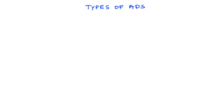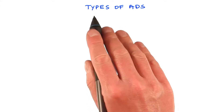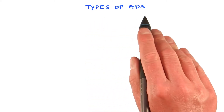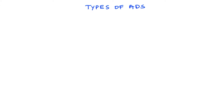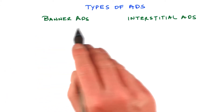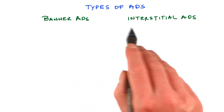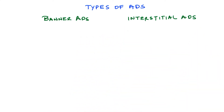All right, so let's now talk about the different types of ads that you can have in your app, and what they look like. In this lesson, we will focus on the following types of ads: banner ads and interstitial ads.